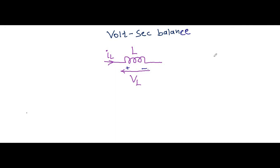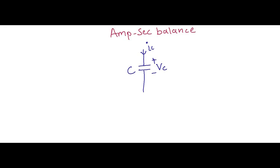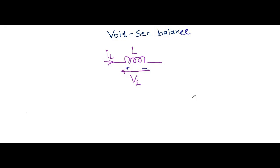Hello friends, welcome to Electronic Circuit Hub. Today we are going to understand the two most commonly used terminologies in power electronics: volt-second balance and ampere-second balance. We will understand what is the ampere-second balance in the capacitor and what is the volt-second balance in the inductor.